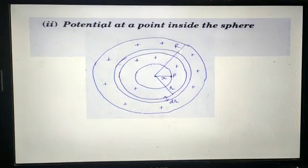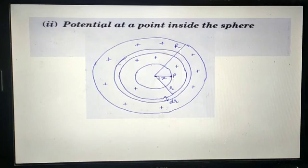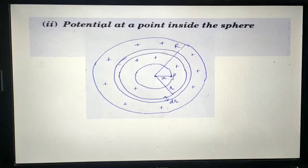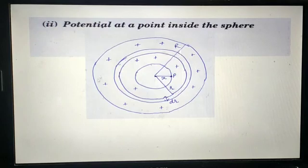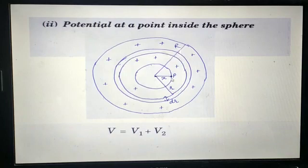Next, let us consider a point inside the sphere — this is very important. Suppose point P is inside the sphere, which has a total radius R, and P is at a distance X from the center. We split the problem: we take the inner sphere of radius X and find the potential V1 at P, then consider the remaining shell of thickness R minus X and find V2. Then we add them together.